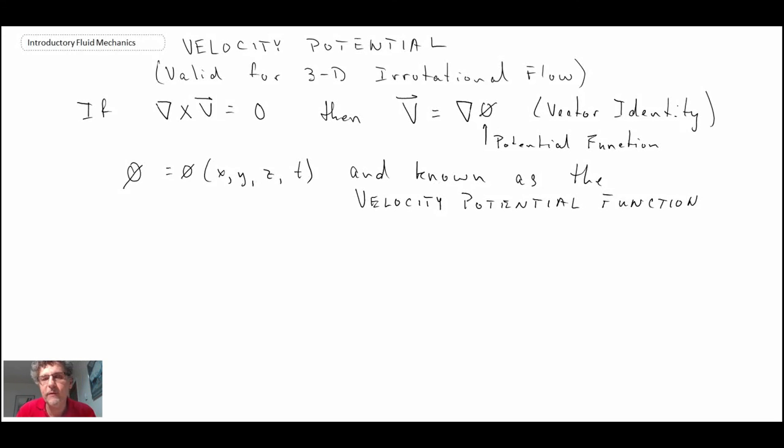And just like with the stream function, we had relationships for the velocity. For potential, we have u is, this one's a little easier to remember because u goes with x, partial phi partial x. V is equal to partial phi partial y. And also there's no sign change here, whereas there was for the stream function. So that makes it a little easier to remember.